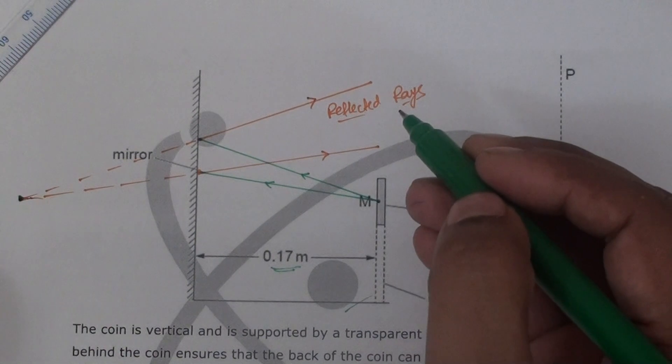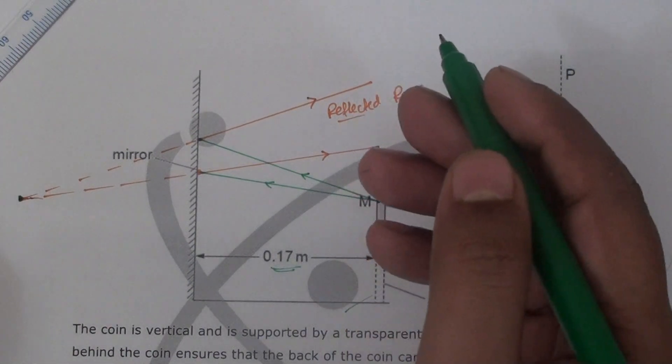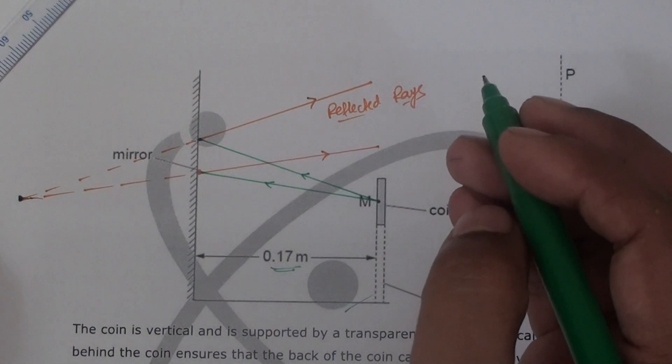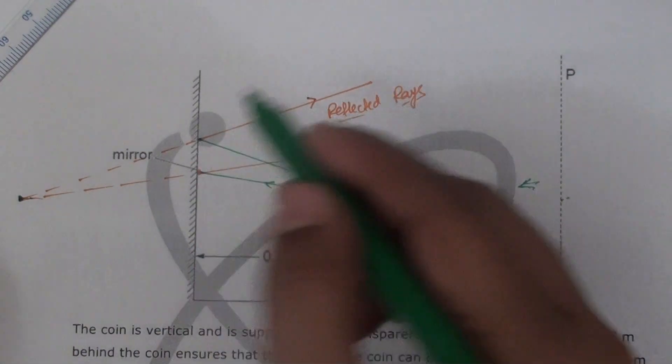Remember when we draw the normal, if by any chance we draw the normal here, the angle of incidence and the angle of reflection should be the same. That's the basic idea which we need to follow.